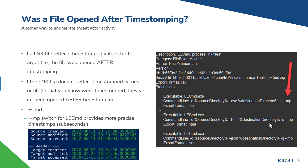This goes back to LNK file access analysis: if a link file reflects the timestomped values you've already identified, the file was opened after timestomping. If it doesn't reflect those values, the file has not been opened after timestomping. Lecmd has a '--mp' switch — probably meaning 'more precision' — which provides more precise timestamps with extra sub-seconds. The KAPE module for Lecmd includes that '--mp' switch in each CSV, HTML, and JSON command.